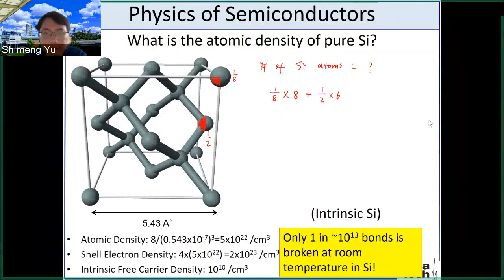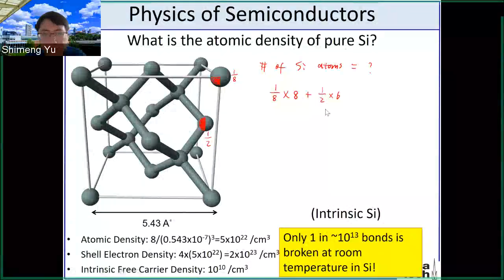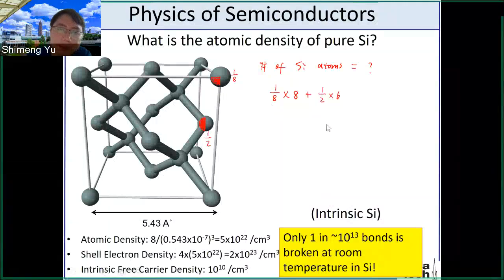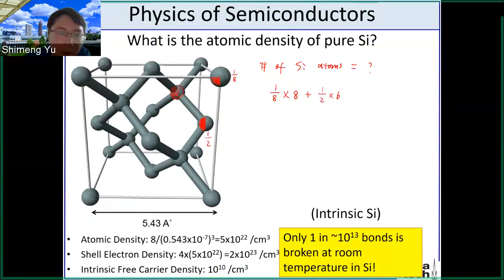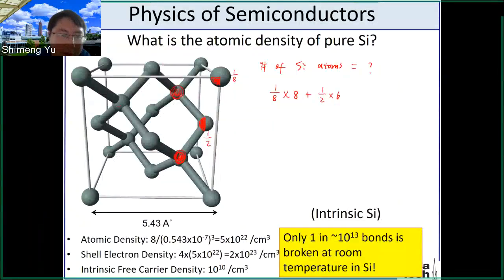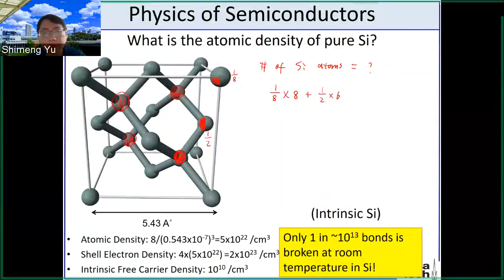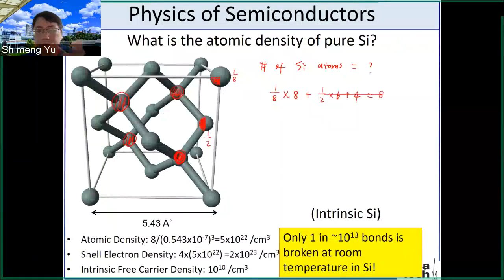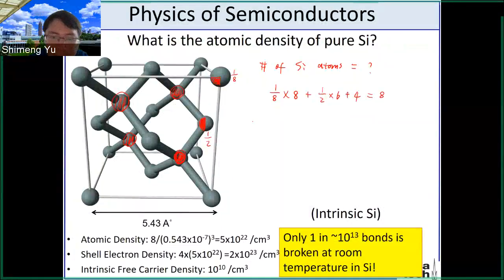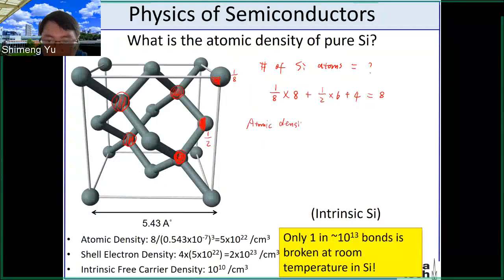So far this is the same as copper. But what is different in silicon is that you have four additional atoms that fully reside inside this unit cell — those four. So you need to add four, and in total you get eight.